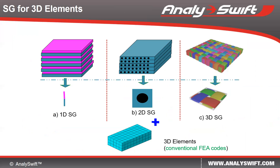If it is a laminate, we can use a 1D structure genome. If it's made of unidirectional fiber-reinforced composites, we can use 2D structure genomes. If it is a woven composite, we can use 3D structure genomes.